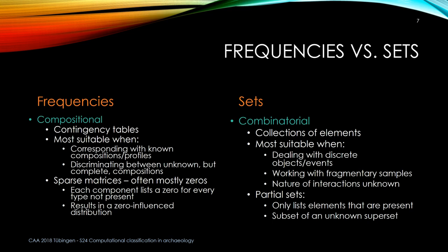A typical site that I deal with has somewhere in the vicinity of two to three hundred artifact types and several hundred individual excavated components — which means most of those are going to be zeros. When you get zeros in most of your table, you end up with what's called a zero-influence distribution that you have to account for within any of your calculations, or you get skewed results. Sets actually end up being more useful for this.